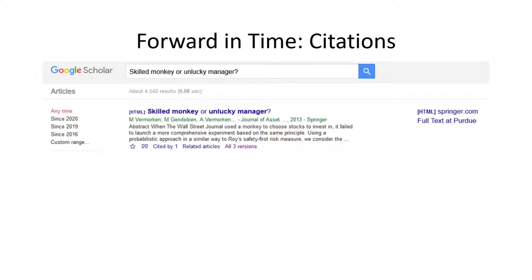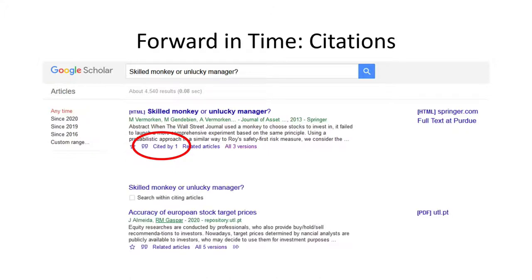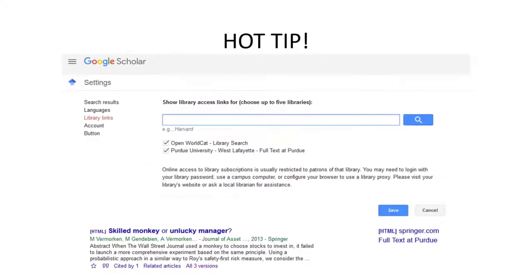The next thing we can do is search Google Scholar for the article to see if any new research has been done that cites the article. In this case, there is one citation. When I click on Cited by One, it will pull up that source, which looks to be related to whatever monkey business I'm researching.